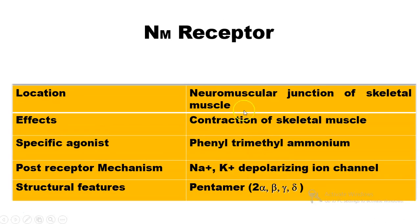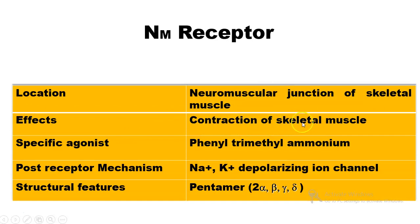Next are nicotinic receptors, which are of 2 types: NM receptors and NN receptors. NM receptors are located in the neuromuscular junction of skeletal muscle, and their effect is contraction of skeletal muscle. The specific agonist of NM receptors is phenyl trimethyl ammonium. The post-receptor mechanism involves a sodium-potassium depolarizing ion channel.